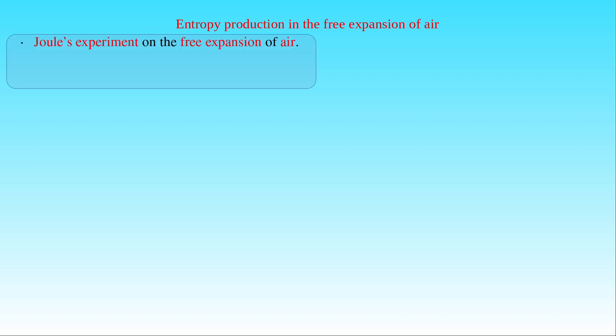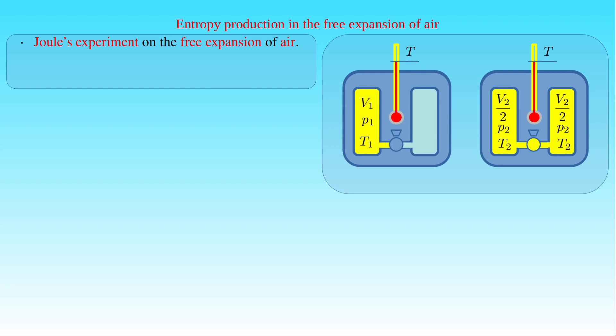The entropy formula for an ideal gas also demonstrates the principle of entropy production in the experiment performed by Gay-Lussac and Joule studying the free expansion of air. We already discussed this experiment using an apparatus with two identical gas containers connected with a tube and placed in a calorimeter. In the initial state A, one container is filled with air and the other is evacuated. The state variables of the gas are the volume V1, pressure P1, and temperature T1.